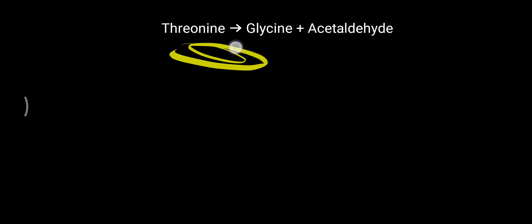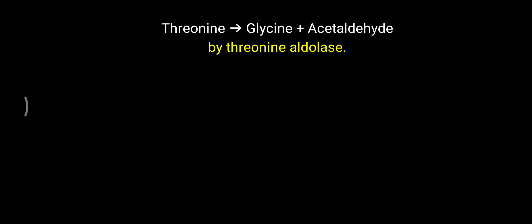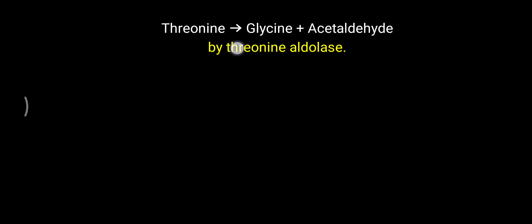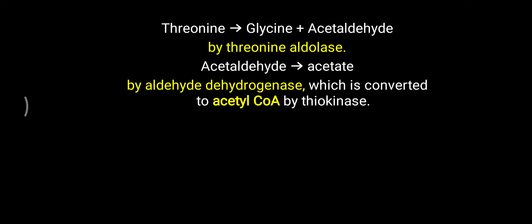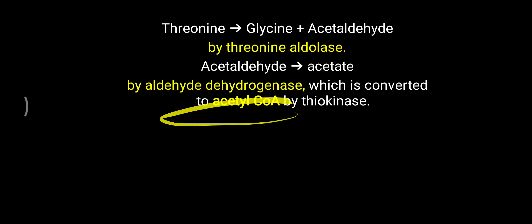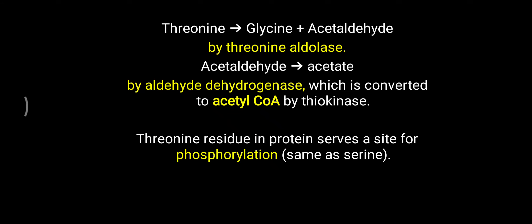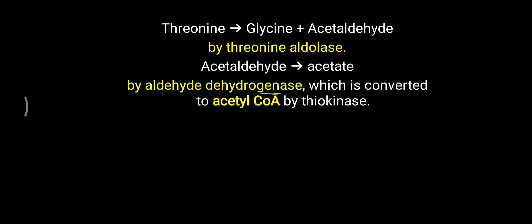However, there is one more reaction: threonine can form acetaldehyde. Threonine aldolase converts threonine into glycine and acetaldehyde — the same enzyme also seen in glycine metabolism. This acetaldehyde is further converted into acetate by the enzyme aldehyde dehydrogenase. Acetate is then converted to acetyl-CoA by thiokinase. This acetyl-CoA is mostly diverted to ketone body formation, which is why threonine is sometimes considered a ketogenic amino acid.